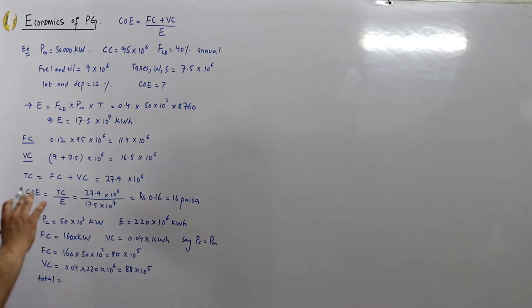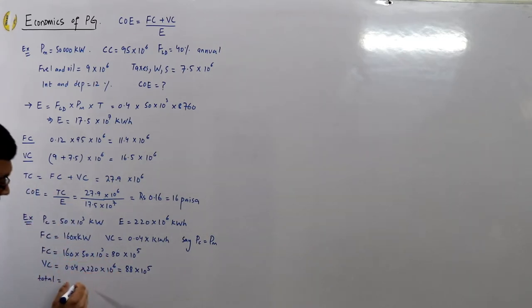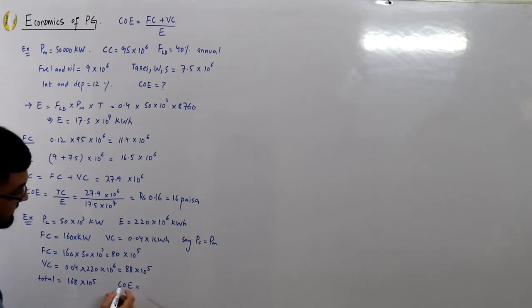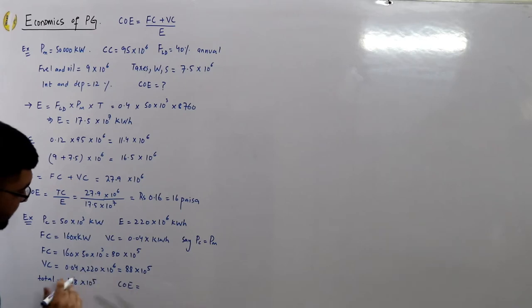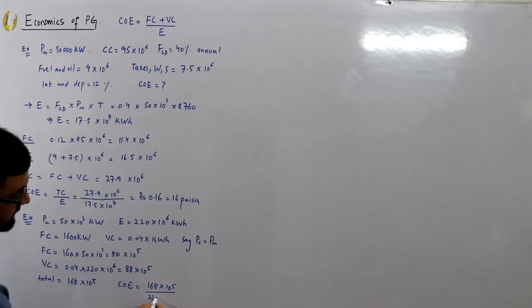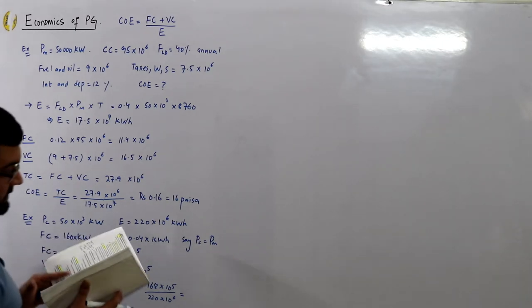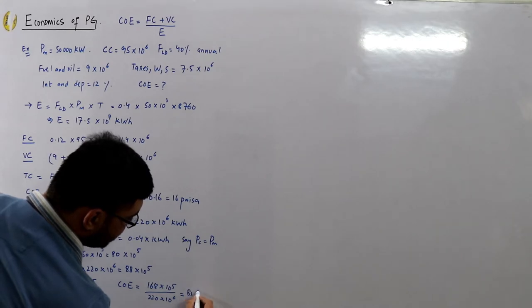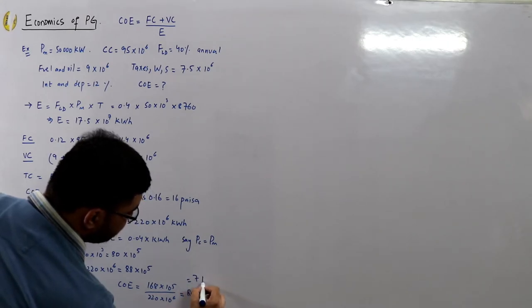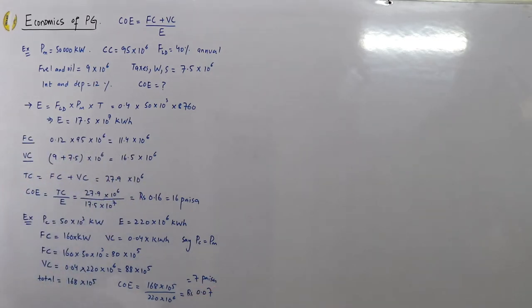Total annual charges = 80 + 88 = 168 × 10⁵ rupees. Cost of electricity per unit = 168 × 10⁵ ÷ 220 × 10⁶ = rupees 0.07, or 7 paise per unit.